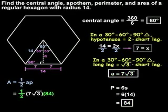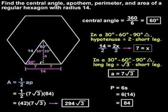Simplifying from here, I would first multiply the 1 half times 84, which is 42, so we have 42 times 7 root 3, which simplifies to 294 root 3. So the area of a regular hexagon with radius 14 is 294 root 3.